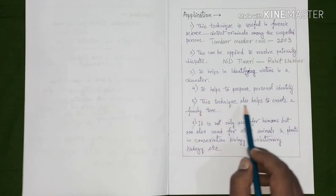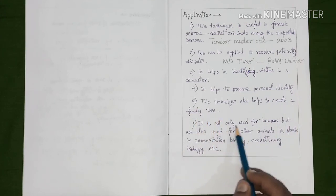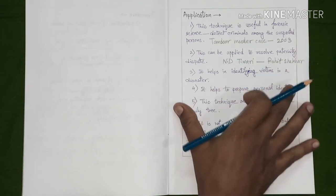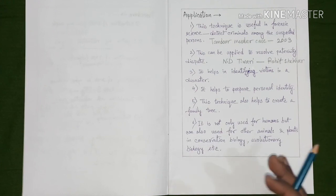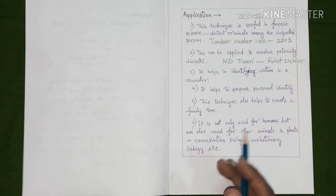It can also be applied to prepare personal identity. This technique also helps to create a family tree. And lastly, it is not only used for humans, but can also be used for other animals and plants in conservation biology, evolutionary biology, and like that kind of biological studies and resources. Thus from this entire discussion, we came to know about the different aspects and famous applications of DNA fingerprinting. Thus DNA fingerprinting becomes the most valuable modern-day biotechnological process.